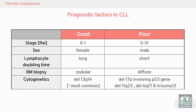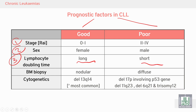Prognostic factors in CLL: prognosis may be good or poor. Good prognosis: stage zero and one. Poor prognosis: stage two, three, four. Females have good prognosis; males have poor prognosis. Lymphocyte doubling time — if it is long it is good; if the lymphocyte count doubles within a shorter time, it is a poor prognosis.